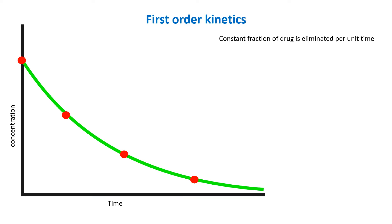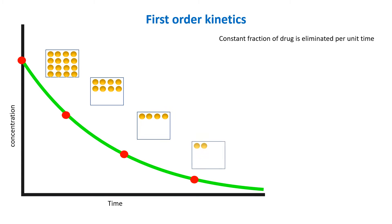Let's say there are 16 drug molecules before the start of drug elimination. Due to the constant rate of elimination, there will be a 50% reduction in plasma concentration at regular intervals. If we look at the time for plasma concentration to reduce by half, which is the half-life of a drug, we can appreciate the exponential decay of plasma concentration.